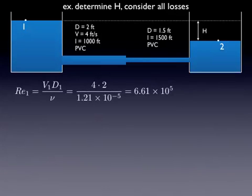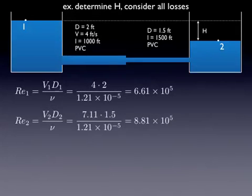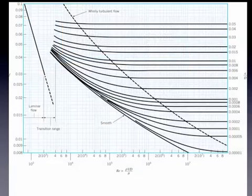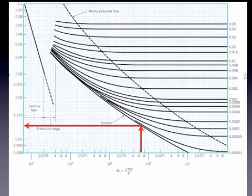We then need to solve for the major losses. So we need the friction factor. So we need to use the Moody equation. So we need the Reynolds number and the relative roughness. So the Reynolds number is 6.6 times 10 to the fifth in the first pipe. In the second pipe, it's 8.8 times 10 to the fifth. We go to the Moody diagram. Because it's PVC pipe, we're going to use the smooth line.